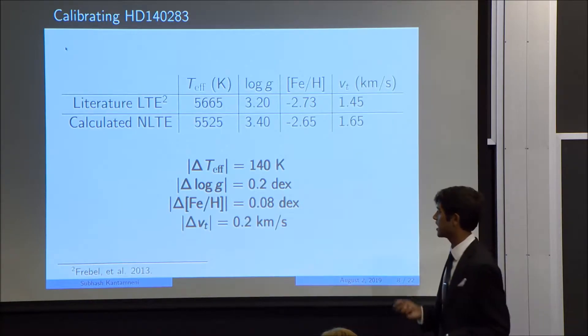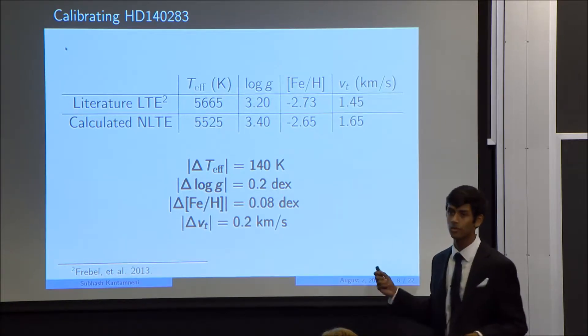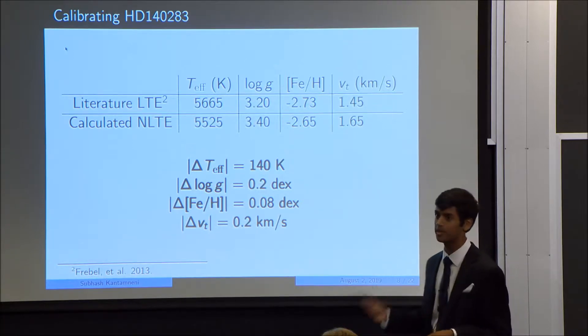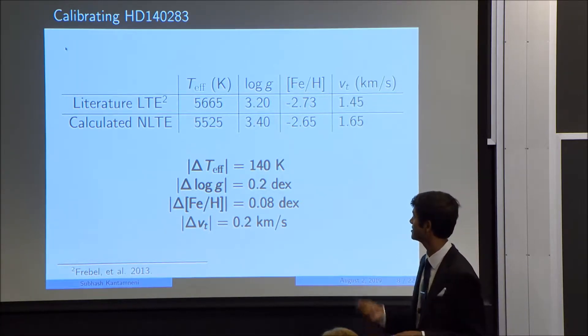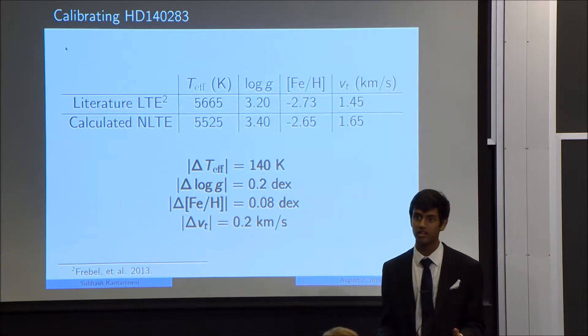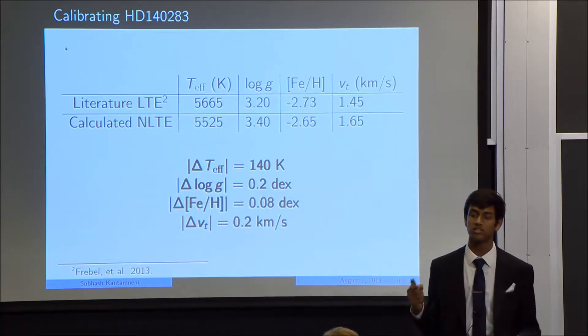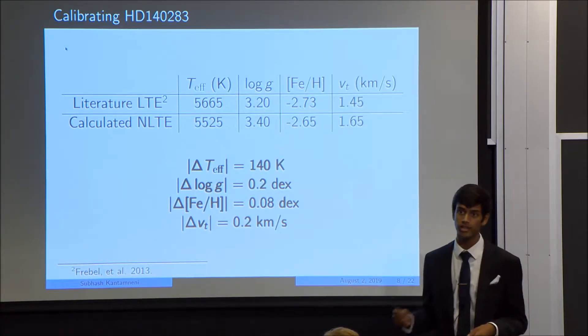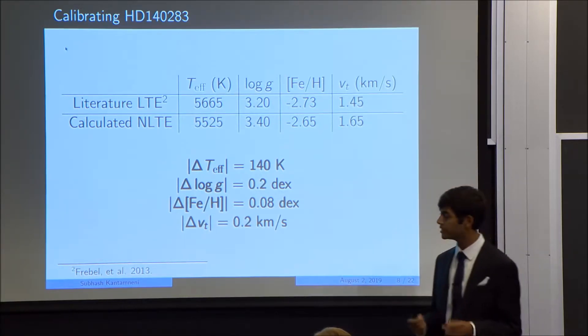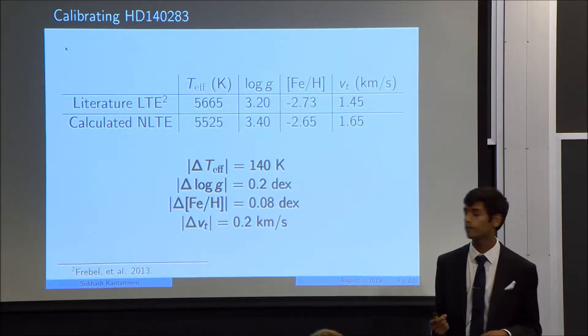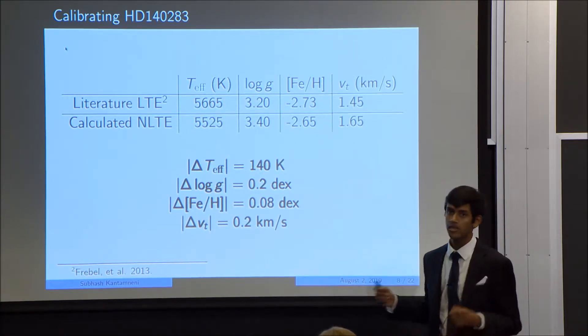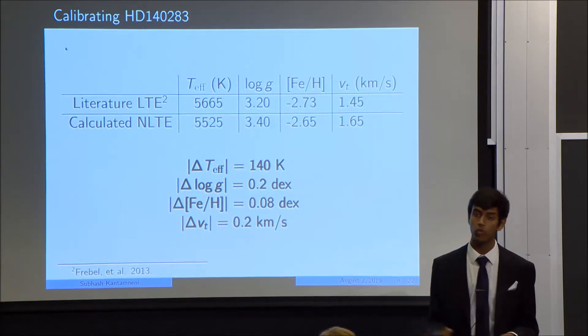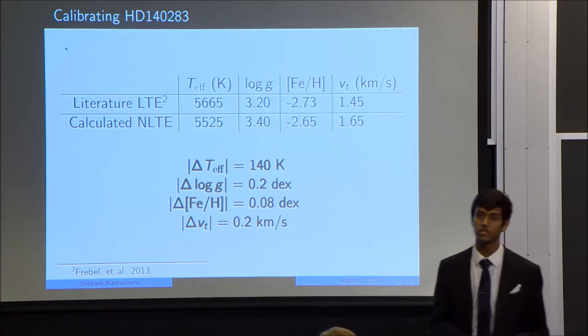So an example of a star that I did this calibration on is the star HD140283, which kind of just sounds like a random star. But it's actually very famous. It's famous enough to have its own Wikipedia article, which is kind of rare for stars. And it's very well studied, and the reason it's so well studied is because it's one of the brightest, oldest stars in the sky. So the literature LTE values for this star are shown here, in addition to my newly calculated NLTE values. And you can see the difference is pretty significant between the two. The temperature difference is almost 150 Kelvin. The gravity difference is 0.2 dex. The metallicity difference is almost 0.1 dex. And the microturbulence difference is 0.2 kilometers per second.